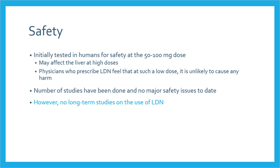Naltrexone was initially tested in humans for safety at the 50 to 100 mg dose level. At these doses, it may affect the liver. However, physicians who prescribe LDN feel that at such a low dose it is unlikely to cause any harm. Patients with pre-existing liver and kidney conditions using LDN should still have their metabolic functions monitored. To date, no major safety issues have been found in studies, but no studies have assessed the long-term effects of LDN, and it is currently unknown whether chronic low-dose use could have effects similar to high-dose naltrexone.